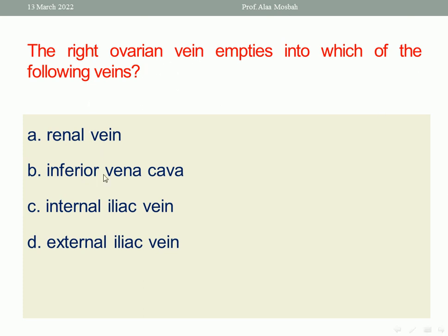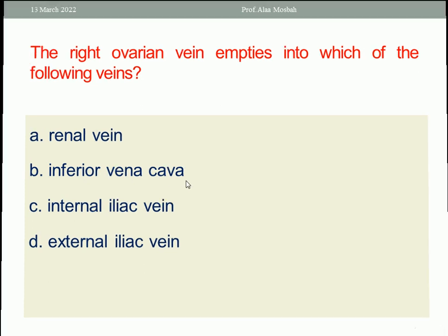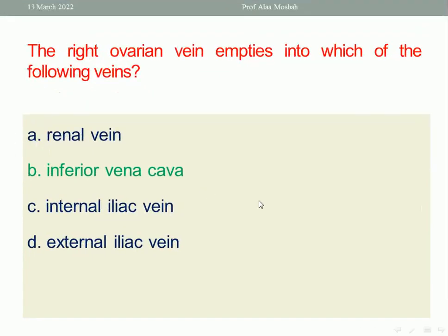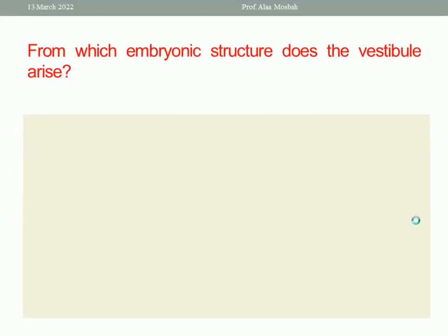The right ovarian vein drains directly to the inferior vena cava. So the right answer will be the inferior vena cava.